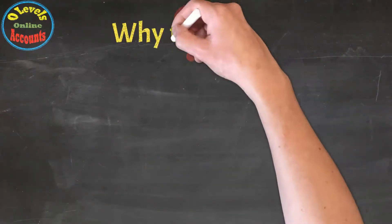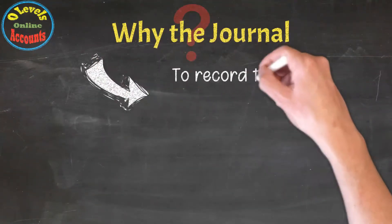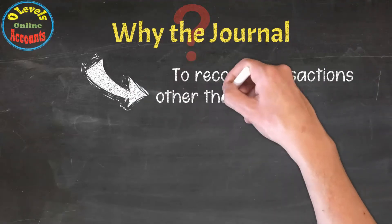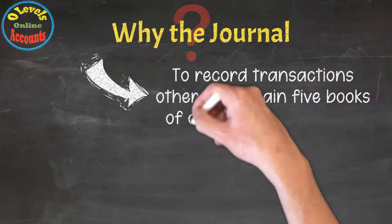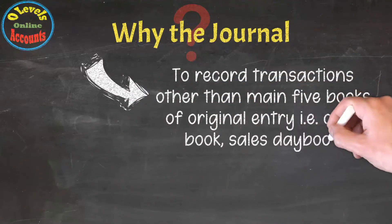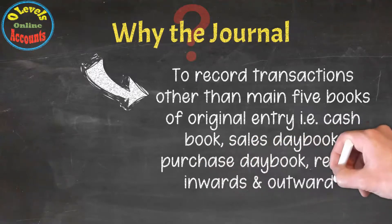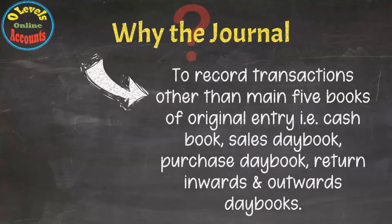Why the journal? It is used to record transactions other than the main five books of original entry, that is the cash book, sales day book, purchase day book, and return inwards and outwards day book.